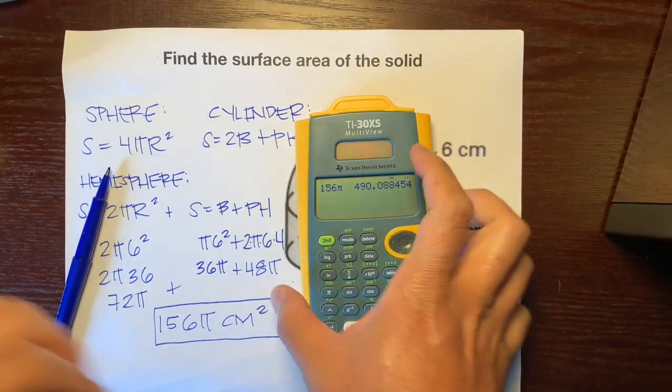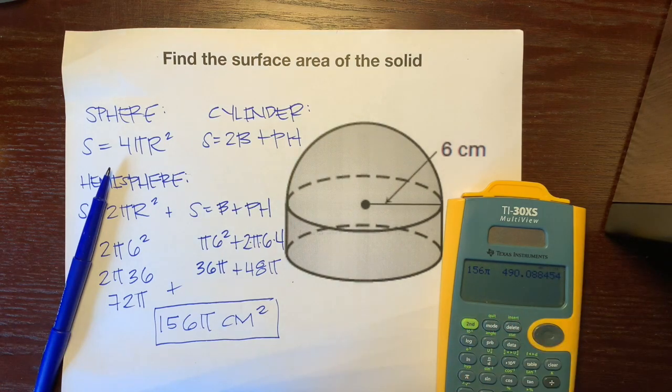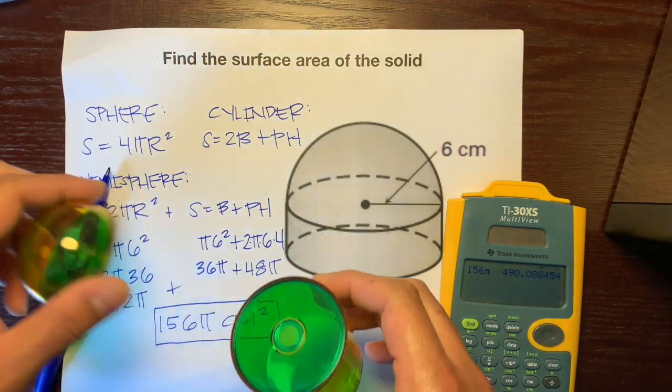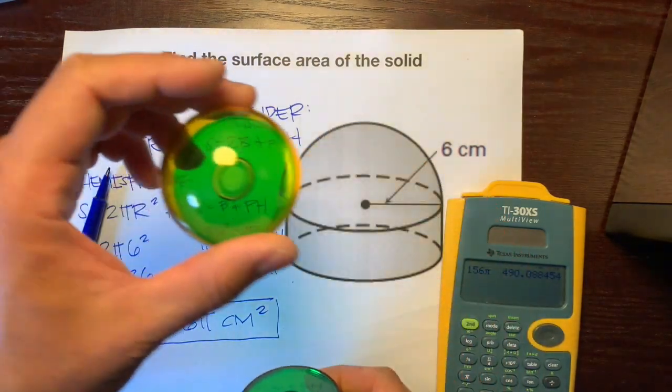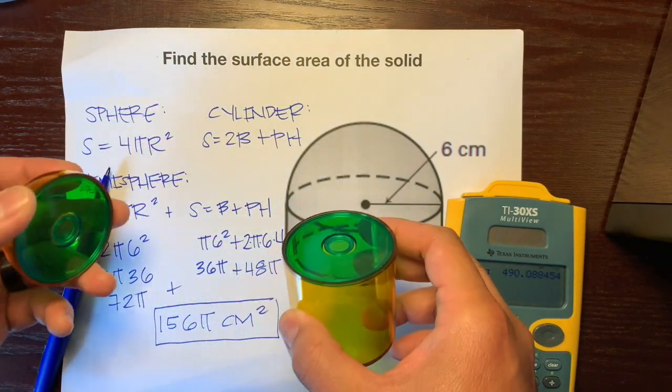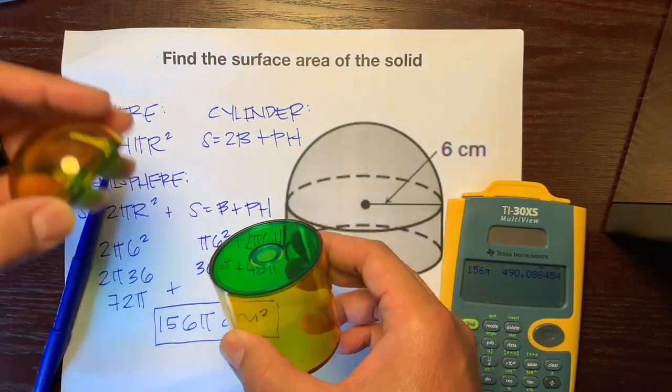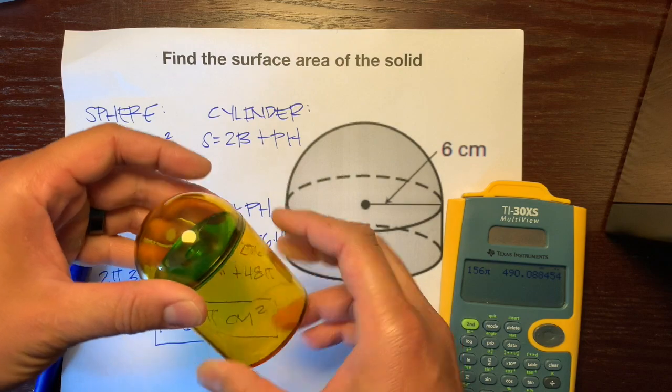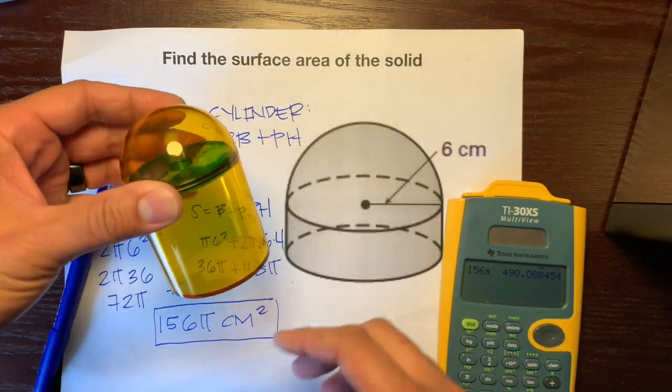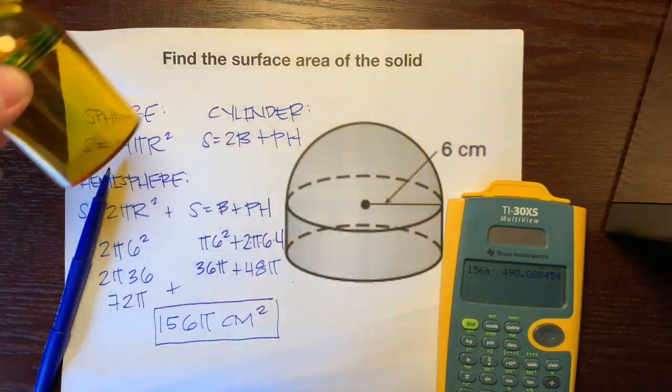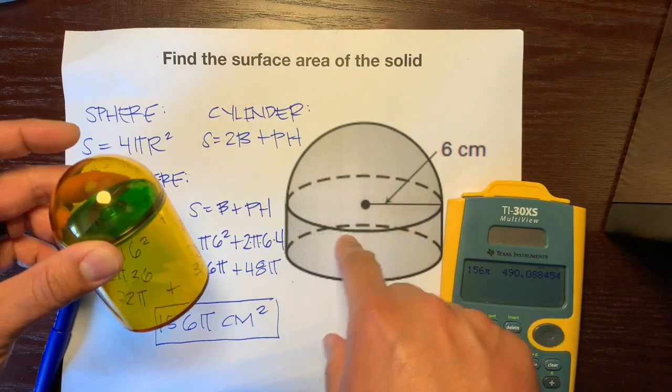Hope this helps. The big takeaway is that when you have composite figures, you don't just take the surface area of one shape and add it to the surface area of the other shape. You have to figure out which part of the shape is being covered up when you combine those two figures together. We figured that this covered up one of the bases.